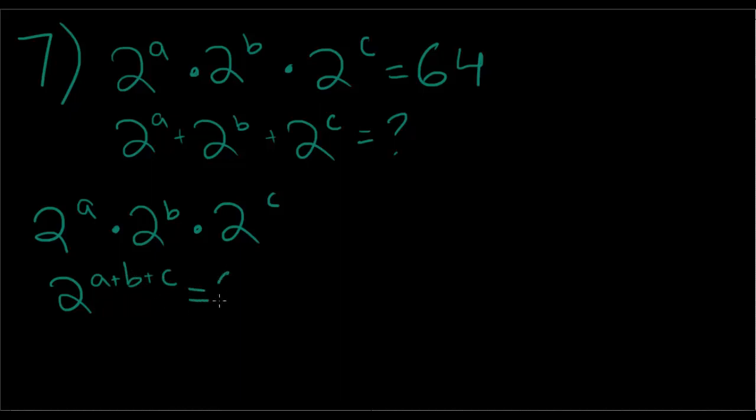This is equal to 64. How else can we write 64? We can write it as a base of 2, right? 2 to the, let's see, 4, 8, 16, 32, 64. So 2 to the sixth. So 2 to the a plus b plus c is equal to 2 to the sixth.